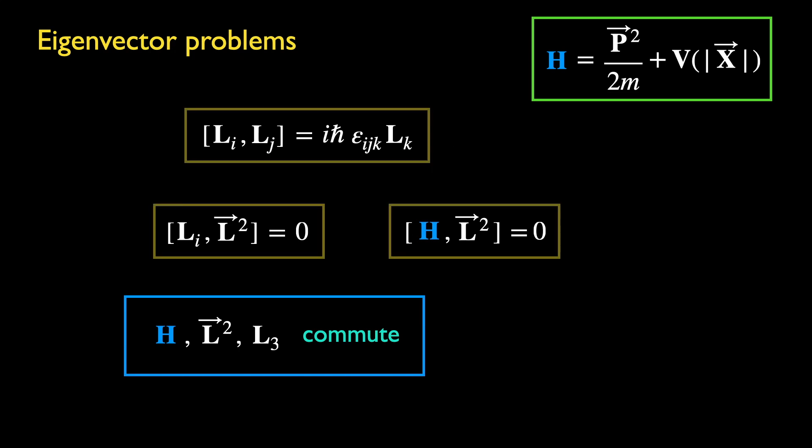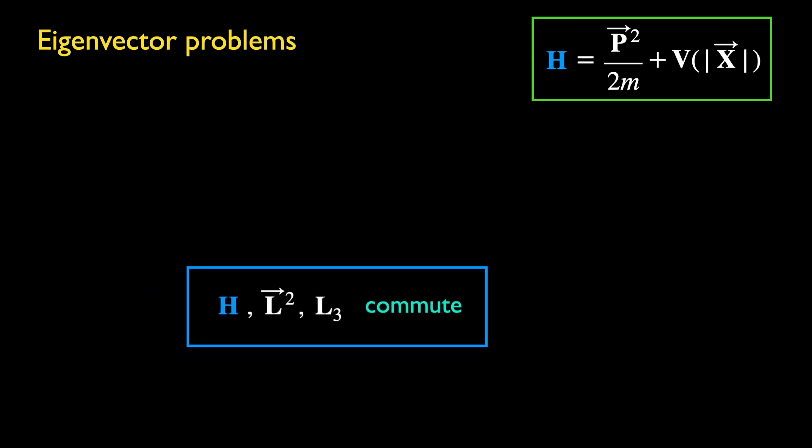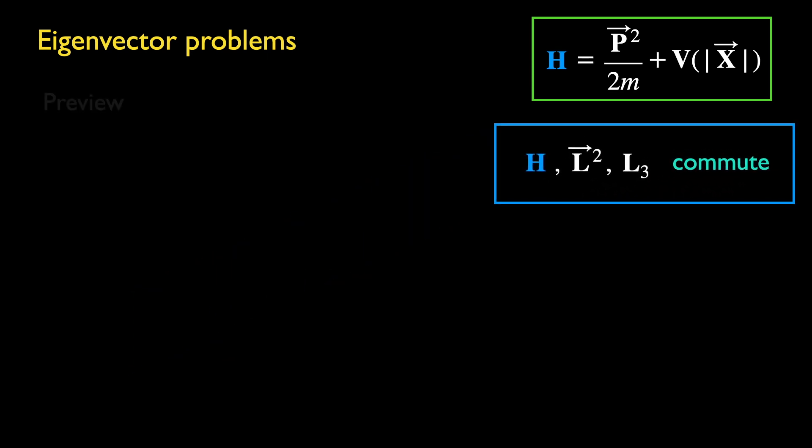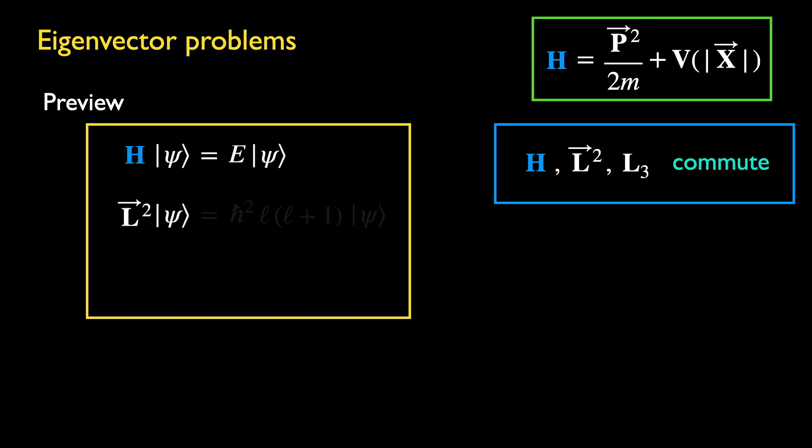These commutation relations will provide powerful constraints that will simplify the eigenvector problems. Here's a preview of the solutions: the shared eigenstate of all three operators. Both the eigenvalues of L square and L3 are quantized by some integers, l and m.